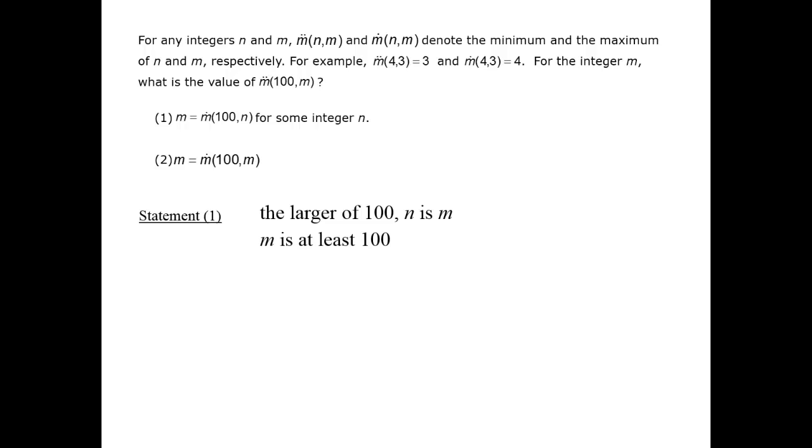From that, we can actually conclude that m is at least 100, even though we don't know exactly what n is. If n is less than 100, then the larger of the two numbers will be 100.